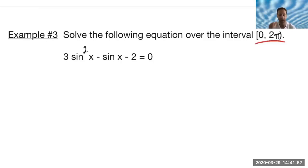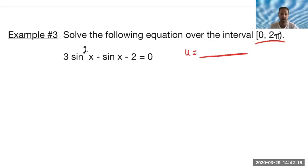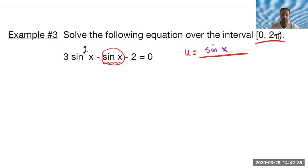Now it's from zero to two pi. Hopefully you recognize that it's already set equal to zero, and it looks very similar to stuff we've seen in the past. Some of you may be familiar with u-substitution: if you didn't like the way it looked, use something you do like. So we're going to replace whatever the middle term is with u. If I call sine x my u, then I want my entire equation in terms of u. I have another sine x that's being squared, so I can rewrite this as three u squared minus u minus two equals zero.